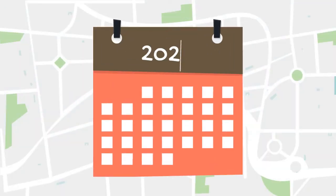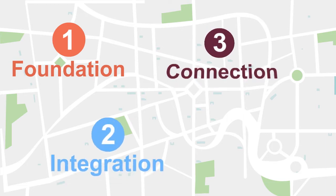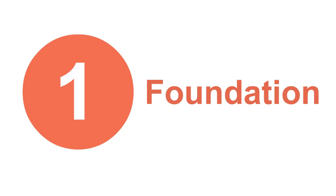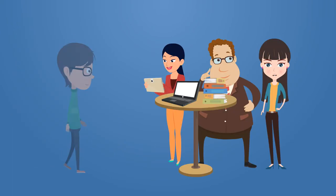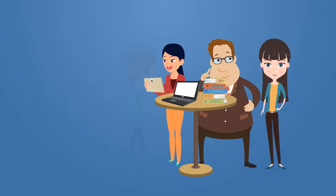It's a four-year plan and roadmap developed using four key themes: foundation, integration, connection, and activation. The open data master plan was co-developed with the public — we held 20 consultations with over 125 people that make up our diverse open data community.